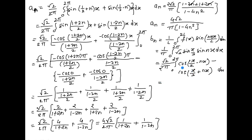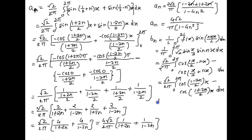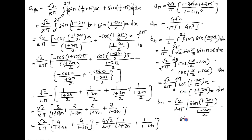This becomes Bn = (√2/2π)∫₀²π [cos((1−2n)/2 · x) − cos((1+2n)/2 · x)] dx. Integrating cos: Bn = (√2/2π)[sin((1−2n)/2 · x)/((1−2n)/2) − sin((1+2n)/2 · x)/((1+2n)/2)] from 0 to 2π.